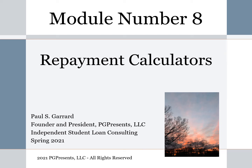Module number eight is on repayment calculators. It's very important that you have at least an estimate of what your monthly payments are going to be when you choose a repayment plan. This is especially important when you get your disclosure statement from your loan servicer indicating what your payments are actually going to be. If they're significantly different than what you were expecting, you can go back and contact them and say, how did you come up with this number? I use this calculator and this is what I'm showing for a monthly payment. So it's very important to use repayment calculators to help you make a decision about the best repayment plan for you and one that you can comfortably afford.